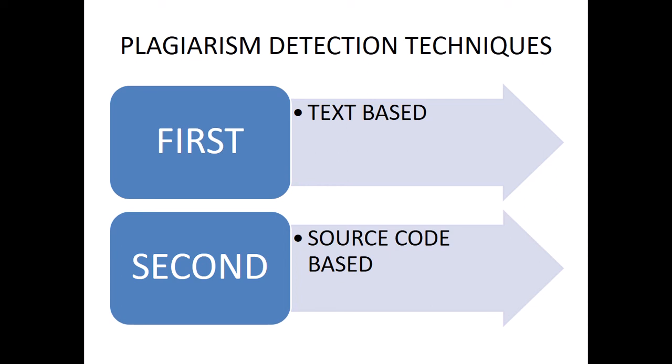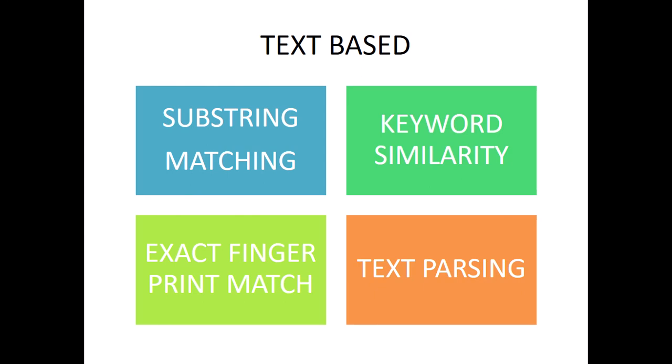There are two detection techniques. The primary one is text-based, which identifies text that has already been written and detects if someone is using it as-is or in a modified form. The second is source code-based, which identifies the main references from which plagiarism has been done. Text-based techniques include substring matching, keyword similarity, exact fingerprint match, and text parsing.